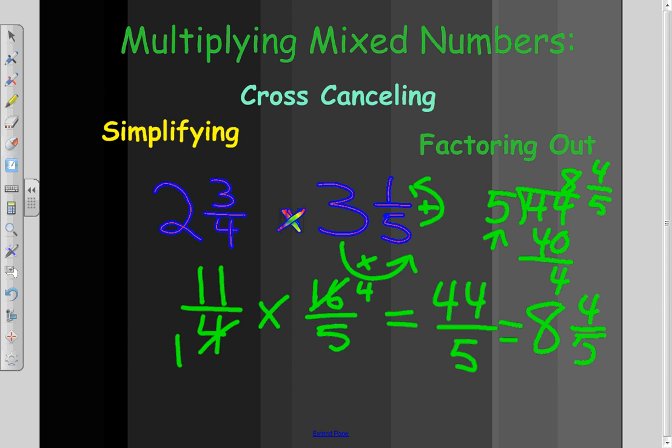That is how you multiply mixed numbers when using simplifying or cross-canceling before you actually multiply the numbers. I hope this helped you out. See ya!